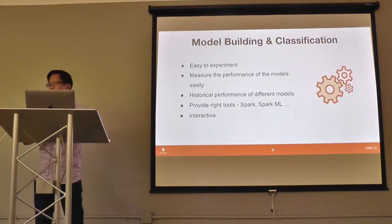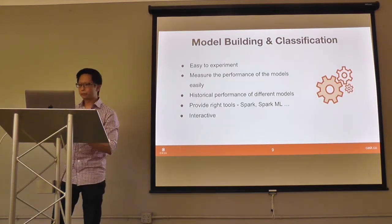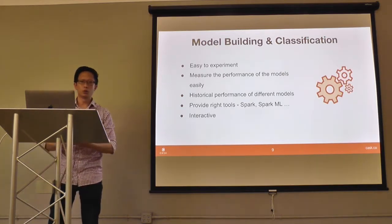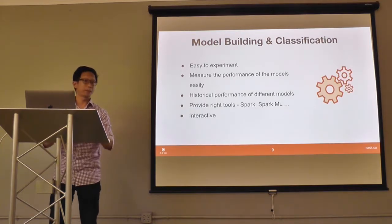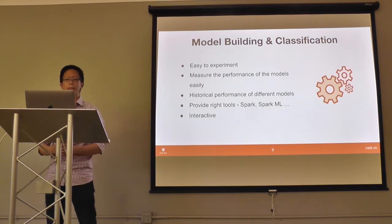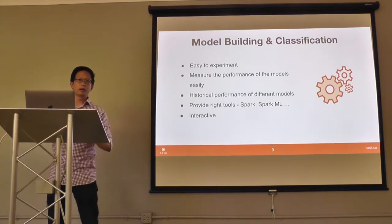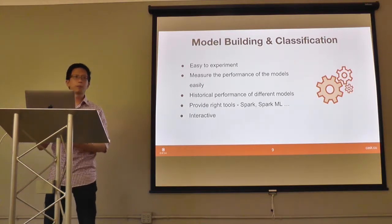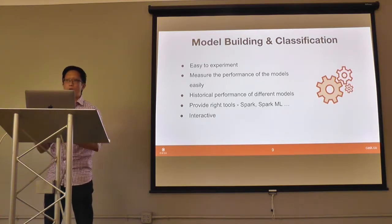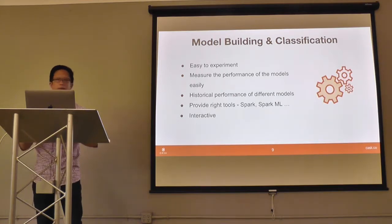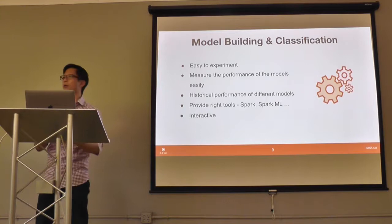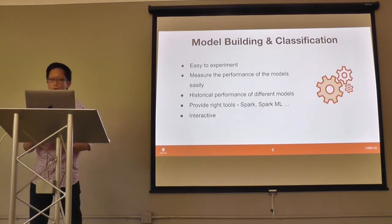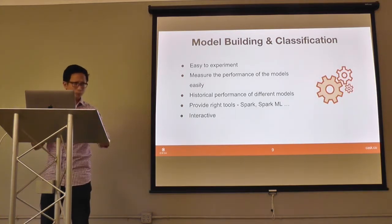After they've ingested and prepared the data, they can finally run machine learning model-building code to create a classifier for happy and unhappy customers. Some of the requirements for a system that handles this: it needs to be easy to experiment, because they might have to test many different machine learning algorithms, measure the performance of each model, and pick the best one. As the company scales and grows, the historical performance of different models might also be important — an algorithm that works best at one company size may not be best at a larger size.